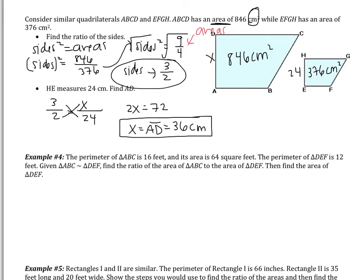A lot of this section involves finding a ratio and then using it. You really need to think about your ratio. Am I going to take sides and square them to find areas? Am I going to take areas and square root them to find sides? Am I going to find sides and set them equal to perimeters? You've got to think about what you have and what you want to know.